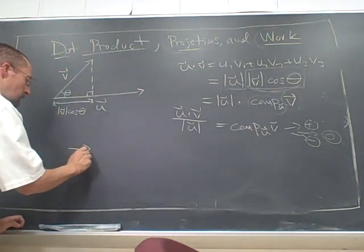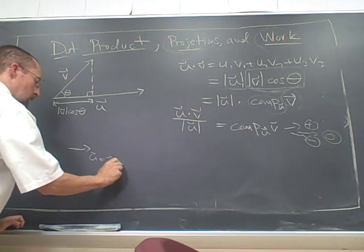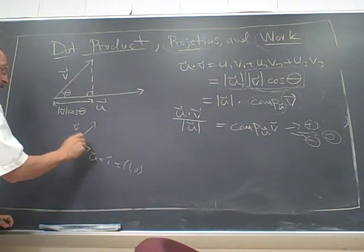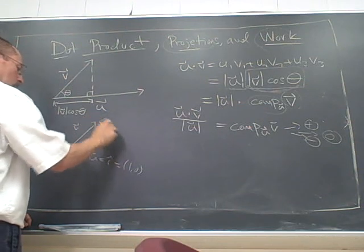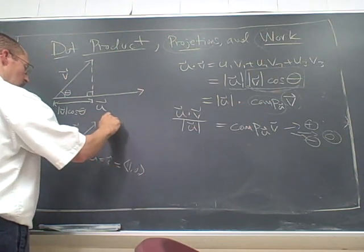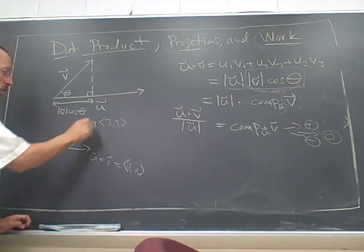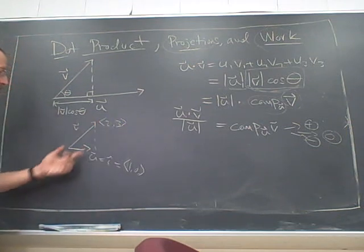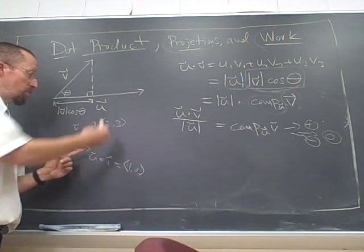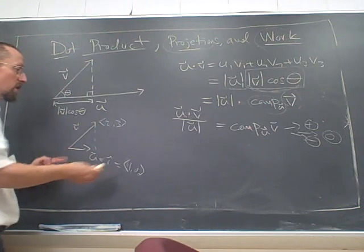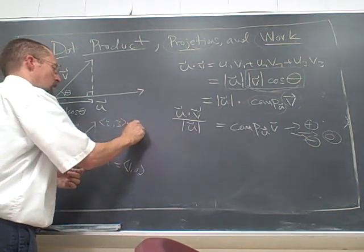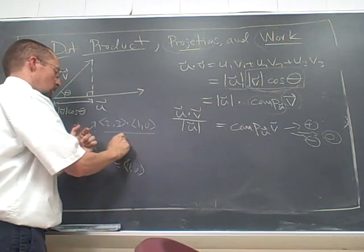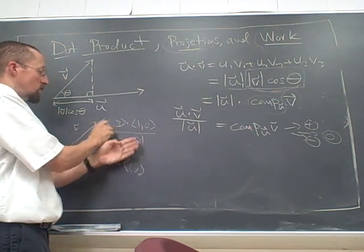For example, if u happens to be i, equals 1, 0, or 1, 0, 0 if you want to be in three dimensions, and I take v, let's say that's 2, 3. Then what am I going to get? I would expect the component of v in the direction of i to just be the i component of that vector. Well, that's what I'm going to get. 2, 3 dotted with 1, 0 is going to give me just 2. And then I divide by the magnitude of a unit vector, which is 1. And so I just end up getting 2.